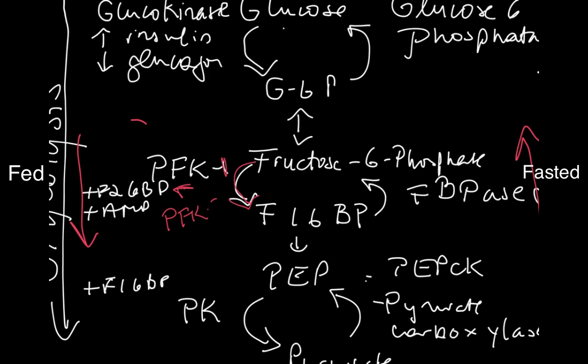Fructose 1,6-bisphosphate in gluconeogenesis is converted back to fructose 6-phosphate by the enzyme fructose bisphosphatase. What's interesting is that whatever is a positive regulator on the fed side, like fructose 2,6-bisphosphate and AMP, is a negative regulator on the gluconeogenic side.